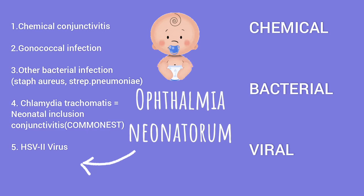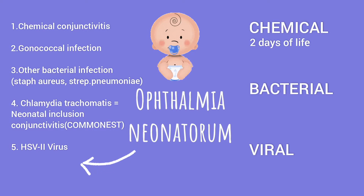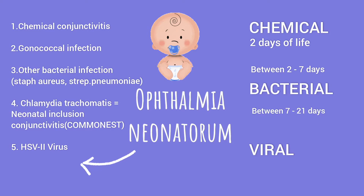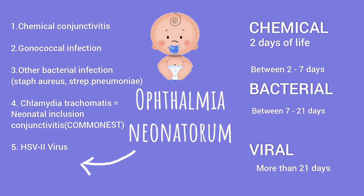Along with chemical causes, there can be bacterial and viral causes. The chemical one occurs within 2 days of birth. Under bacteria, gonococcal infections can occur within 2–7 days, whereas Chlamydia trachomatis, which causes neonatal inclusion conjunctivitis, can occur from 7–21 days. So overall, bacteria need 2–21 days. Herpes simplex infection occurs after more than 21 days.